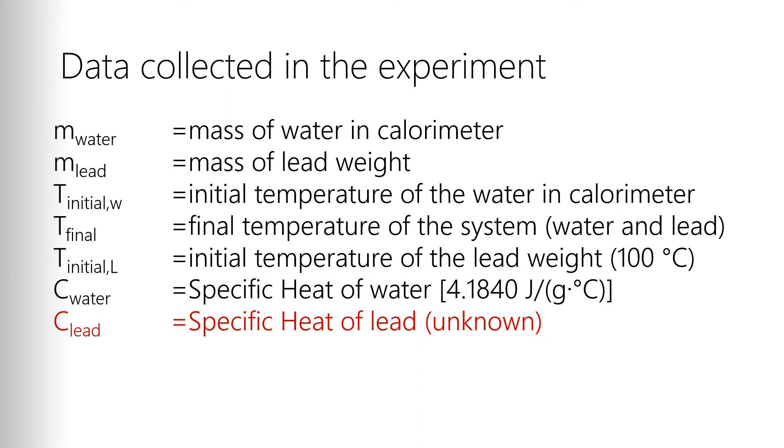The last two things we have are the C of water, which is the specific heat of water. We know that. It's 4.1840 joules per gram degree Celsius. And then we're trying to figure out the specific heat of the lead. That's our unknown. So let's look at how we do this calculation.